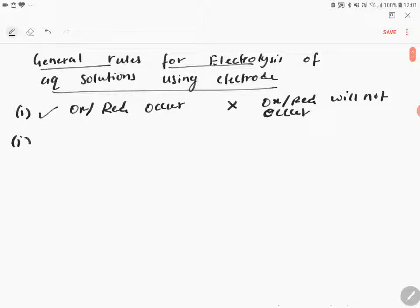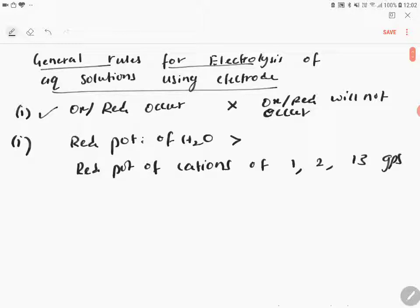Okay, first one: reduction potential of water is greater than reduction potential of cations of group 1, 2, and 13 groups in the periodic table. That means you should know thoroughly the periodic table by groups. So for example, these ions are Na+, K+, Ca2+, Mg2+, Al3+. Therefore, reduction occurs at cathode.